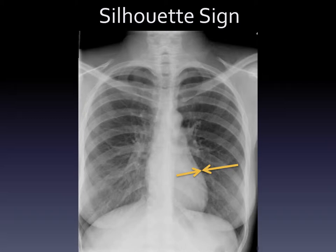If it's oriented in this way and the two structures are different densities out of those four, then we can see a line. We can see the heart versus the lung because the lung is less dense than the heart. Here we can see the edge of that rib — a bone — from the soft tissue near it, probably muscle, because it's oriented in the right way and there are different densities.